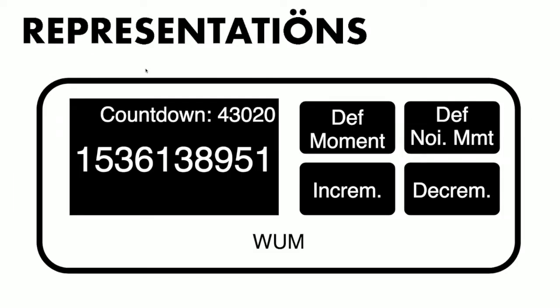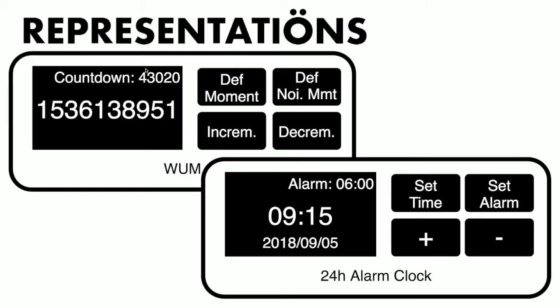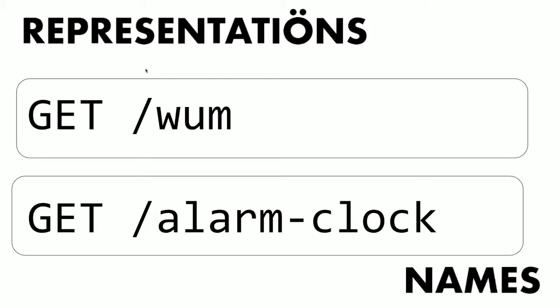Consider this device — with its cryptic labels and numbers, it's impossible to guess its purpose or how to operate it just by looking at it. But change a few things and — what a surprise — it's an alarm clock. These two devices have exactly the same purpose but propose two different representations of it. Which do you prefer: the straightforward alarm clock or the cryptic one? What is terrible for an everyday object's usability is equally terrible for API usability. When we design an API, we must take care of the representations we choose.